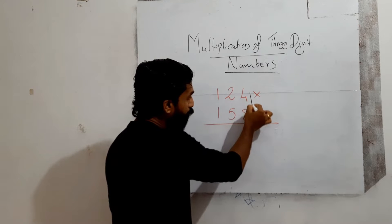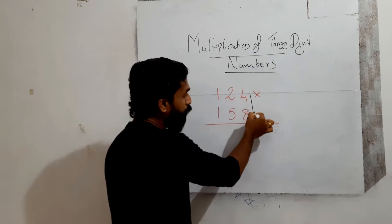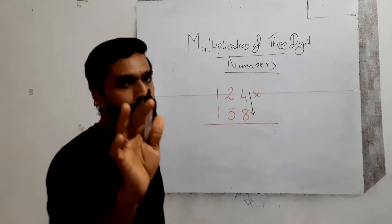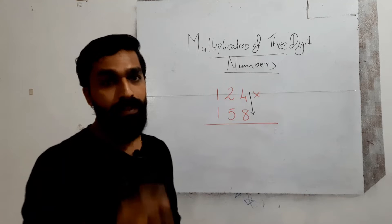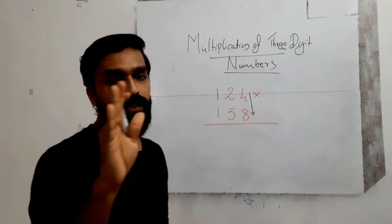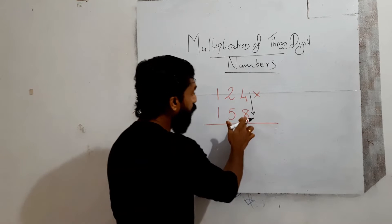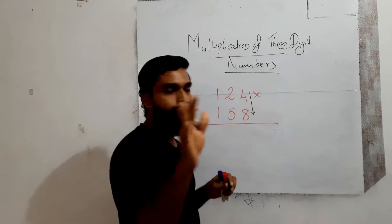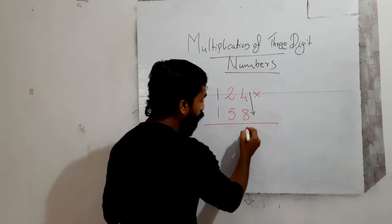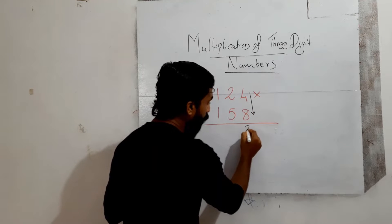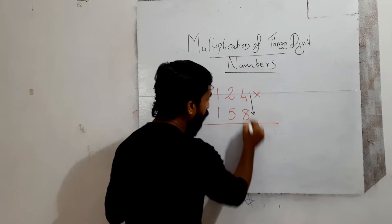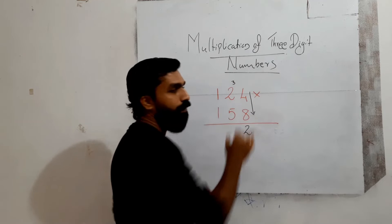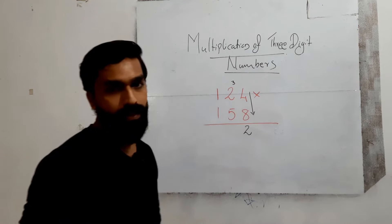First step: multiply the unit digits. 8 into 4 is equal to 32. Write 2 here, and 3 is the carry over.